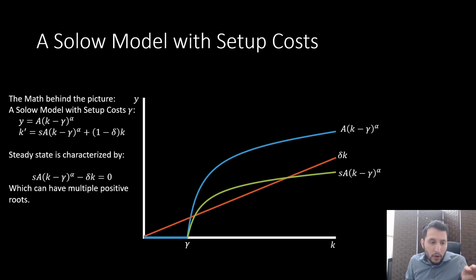Mathematically, we could write this model as follows where we have our production function written kind of like this Stone-Geary type relationship where we have this gamma input requirement and our law of motion which is pretty much just going to be unchanged, just that we put in our production function which is going to look a little bit different.